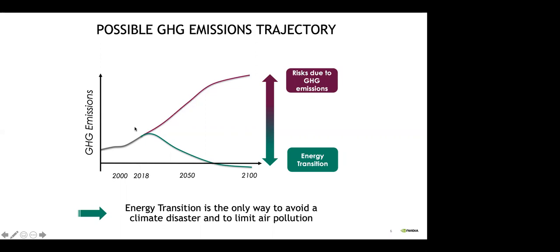Today we are at a fork where either we set a threshold and reduce greenhouse gas emissions sufficiently to limit the increase in global average temperature to two degrees compared to pre-industrial levels — this is the agreement countries made at COP21 — or we fail to do so and emissions will continue to increase with temperatures consequently, leading to disorders in the future. Energy transition is the only way to avoid a climate disaster and air pollution.